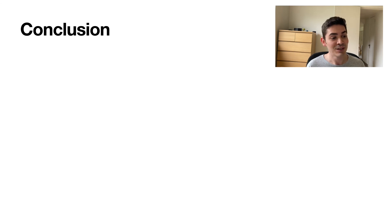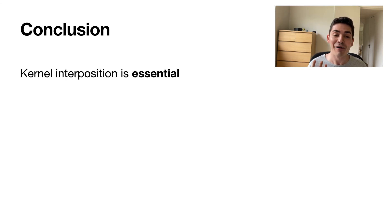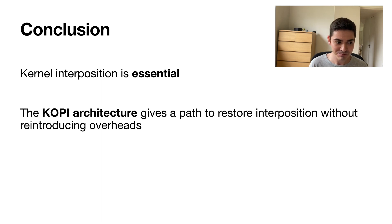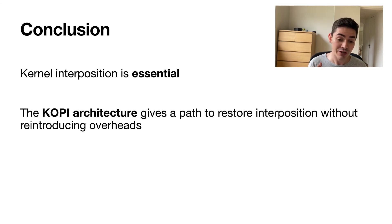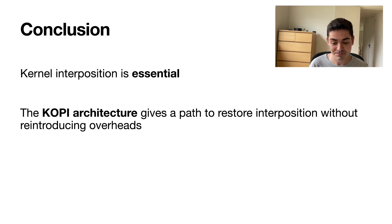To conclude, I hope that I have convinced you that kernel interposition is essential, and the COPI architecture really gives a path to restore kernel interposition without reintroducing overheads. With that, I thank you and I can take any questions.